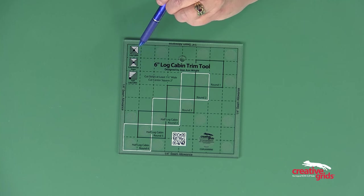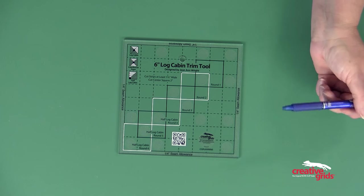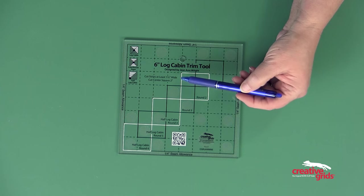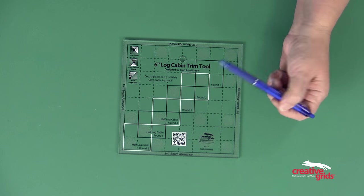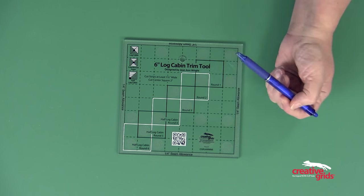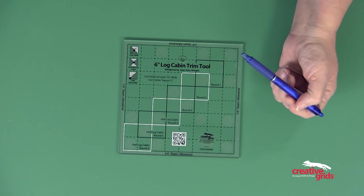There are also icons that show three of the most popular blocks that are made with this tool and cutting instructions right here that tell you what size to cut your center square, which is 2 inches, and the strips have to be cut at least one and a half inches wide.